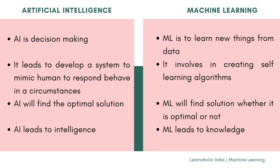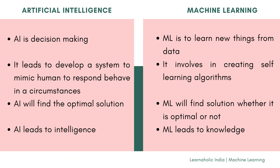Artificial Intelligence goes for finding the optimal solution, whereas Machine Learning will go for a solution whether or not it is optimal. Finally, Artificial Intelligence leads to intelligence, whereas Machine Learning leads to knowledge.